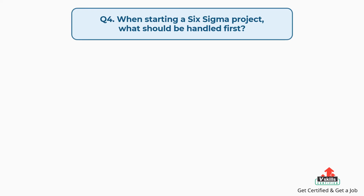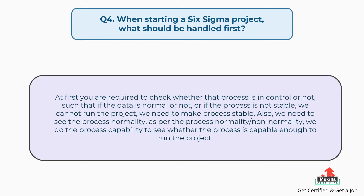Question number four: When starting a Six Sigma project, what should be handled first? At first, you are required to check whether that process is in control or not, such that if the data is normal or not. If the process is not stable, we cannot run the project — we need to make the process stable. Also, we need to see the process normality; as per the process normality or non-normality, we do the process capability to see whether the process is capable enough to run the project.